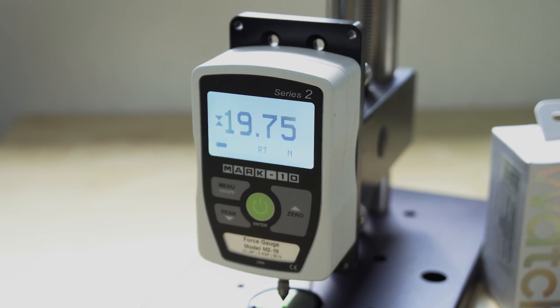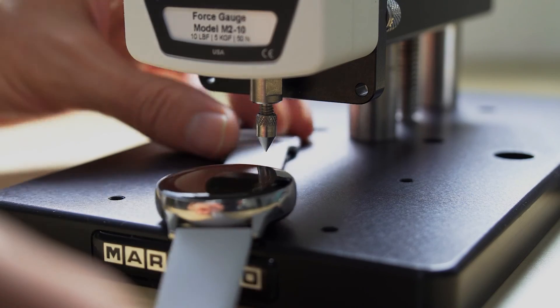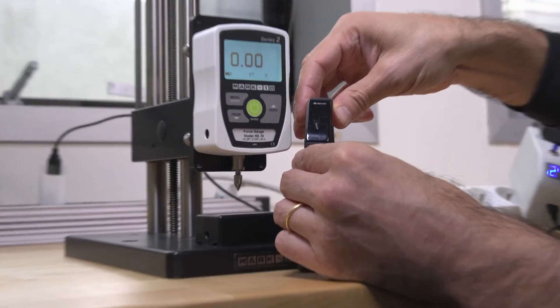After that, we test scratch resistance by applying a set pressure to the screen using a force gauge. Some come out blemish free, while others are ruined.